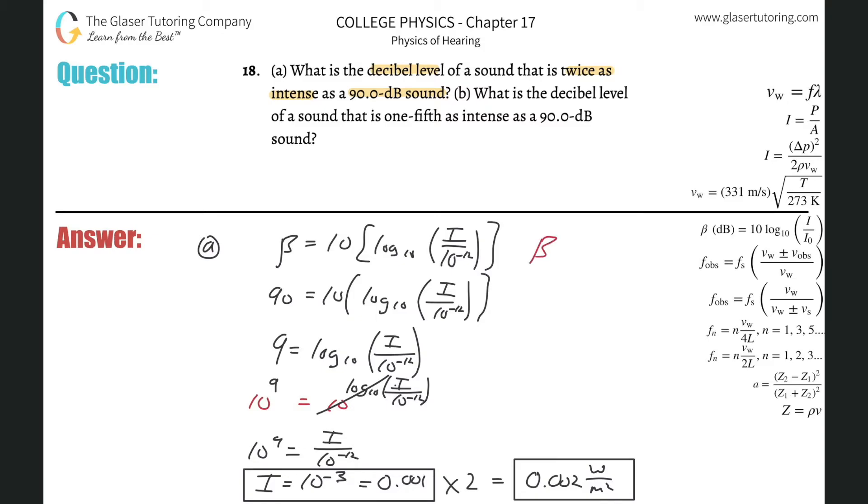So now here's the decibel, but it'll be easier. It will be equal to 10 multiplied by log base 10 of 0.002 divided by 10 to the minus 12th. So simply just plug it on in now. So this is going to be 10 multiplied by the log and then plug in 0.002 divided by 10 raised to the negative 12th. And what do you get? About 93.